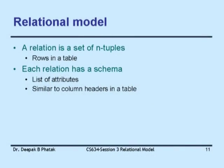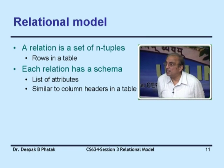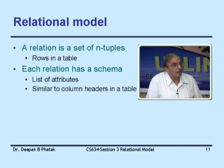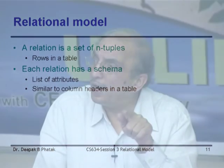The relational model defines relations mathematically as sets of n-tuples. A couple means two values, a triple means three, and an n-tuple means n values together forming a single element. Many such elements constitute the relation. In short, a relation is a set of rows in a table. Each row has as many values as there are attributes. If a table has five attributes, you have a five-tuple, and the set of all five-tuples is the relation.